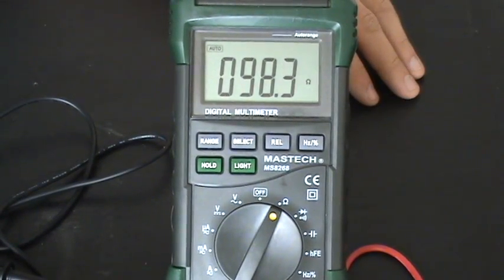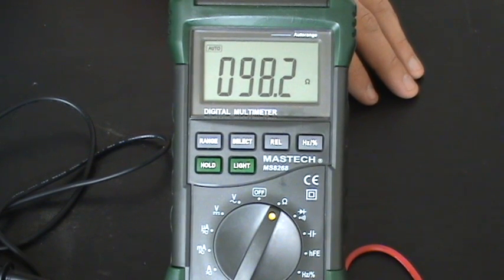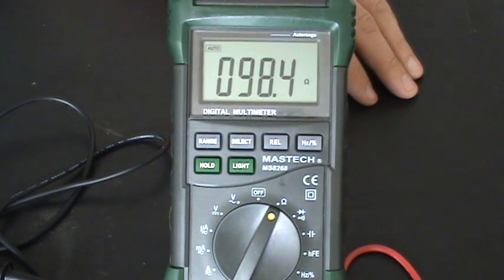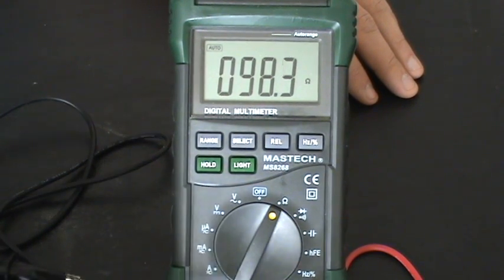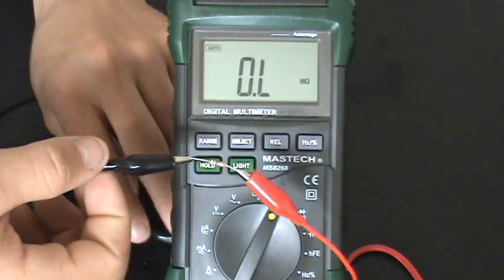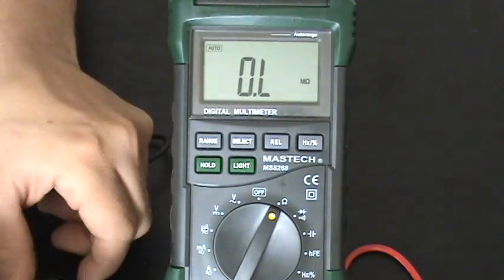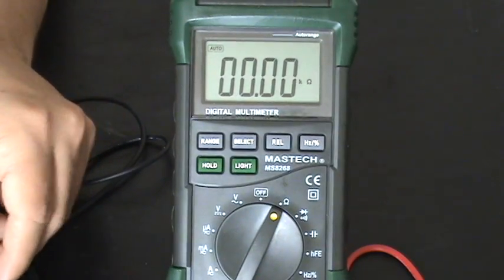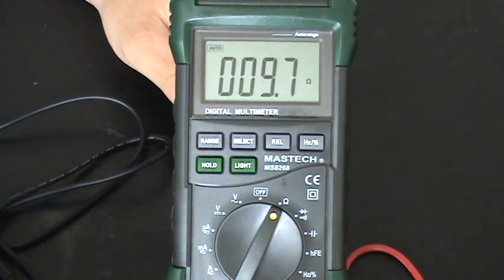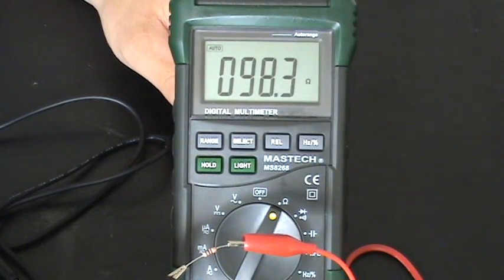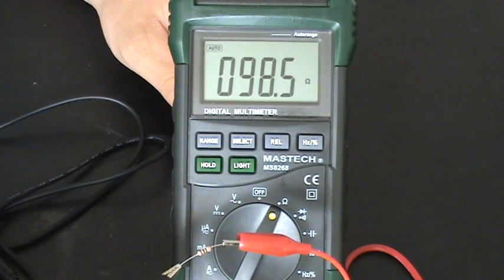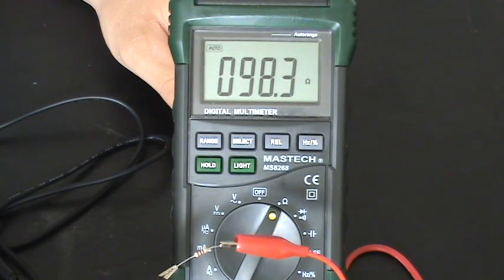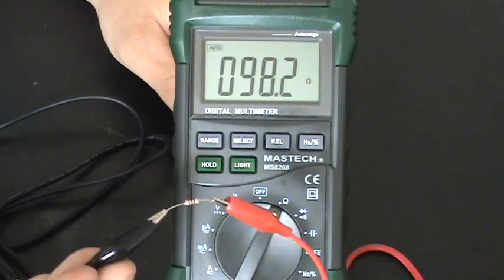Now, since this is a 100 ohm resistor with 5% tolerance, it should be anywhere in the range of 95 ohms to 105 ohms. As you can see, once it tests for resistance - I just unclipped my alligator plug because I bumped it - it should read anywhere from 95 to 105 ohms. This one is reading right around 98.4 or 98.5. So that's how you test a resistor for resistance. Let me show you...